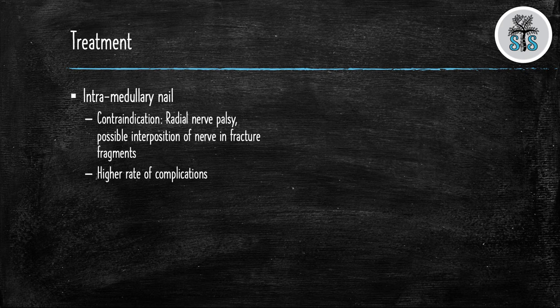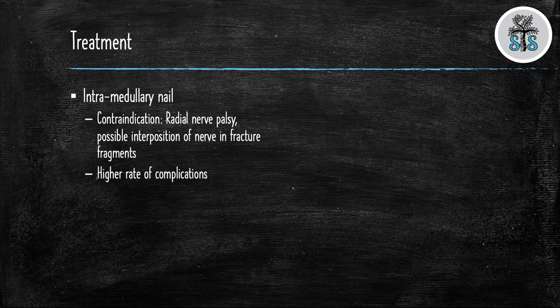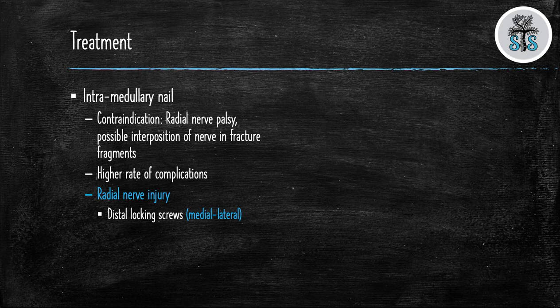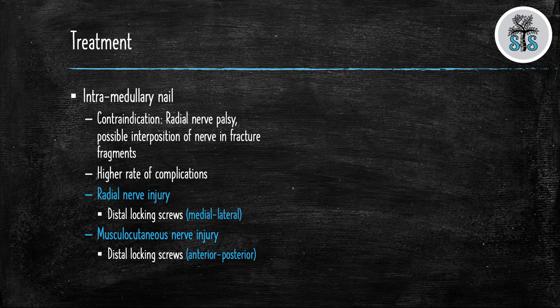Nails have a higher rate of complication. They have a higher rate of malreduction, decreased range of motion post-operatively. It is important to remember that nails are load sharing devices and that if there is a large difference between the implant and the metaphyseal diameter it can lead to instability and will go on to delayed union or non-union. When you place your distal locking screws from medial to lateral the radial nerve is at risk. When you place your screws anterior to posterior the muscular cutaneous nerve is at risk.